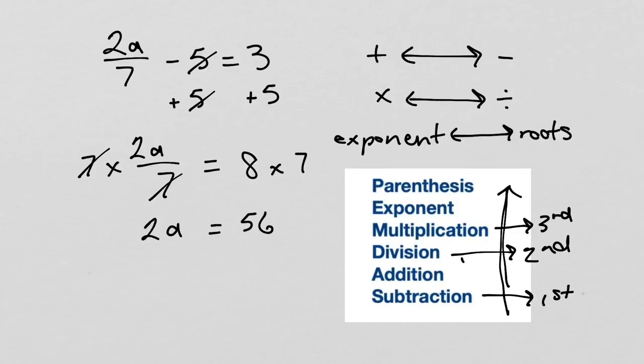Finally, we will get rid of the times 2 by performing the opposite operation on it. So, we will divide both sides by 2. The 2 will cancel out. So, here you can see that it is really just like the two-step equation. We are just doing more steps.